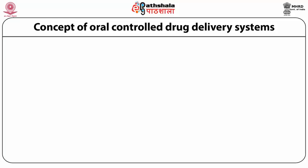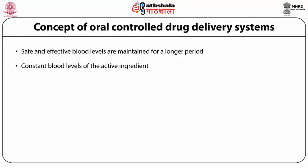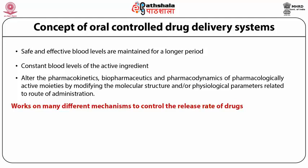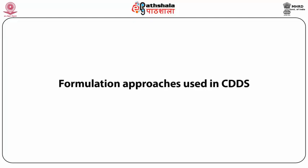The conceptualization of controlled drug delivery systems is primarily based on making a system that maintains safe and effective blood levels for a longer period, leading to constant blood levels of the active ingredient. It can alter the pharmacokinetics, biopharmaceutics, and pharmacodynamics of pharmacologically active moieties by modifying molecular structure and/or physiological parameters related to the route of administration. In short, controlled drug delivery systems could depend upon matrix system design, osmotic pressure designs, reservoir systems, or altered density systems, designed to release drug at a particular rate or specific site.